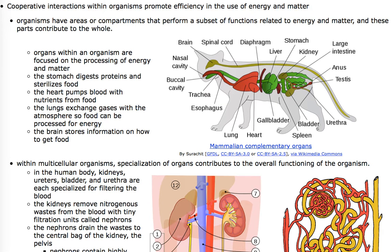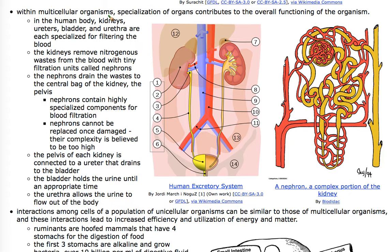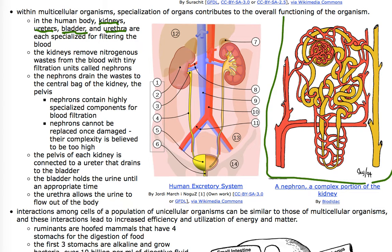A specific organ system to showcase is the urinary or excretory system. Within multicellular organisms like humans there are many organ systems. In the human body we have kidneys, ureters, bladder, and the urethra, each specialized for filtering blood. The kidneys remove nitrogenous waste from the blood using tiny filtration units called nephrons. Waste drains to the kidney's pelvis, down a ureter to the bladder, which is then pressurized to push urine out through the urethra.